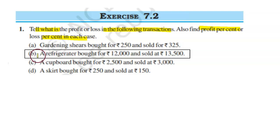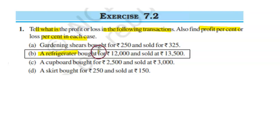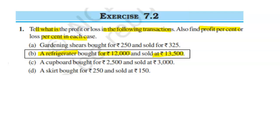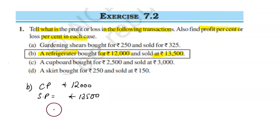In this video we have to do Part B: a refrigerator bought at rupees 12,000 and sold at 13,500. The cost price is 12,000 and the selling price is 13,500.